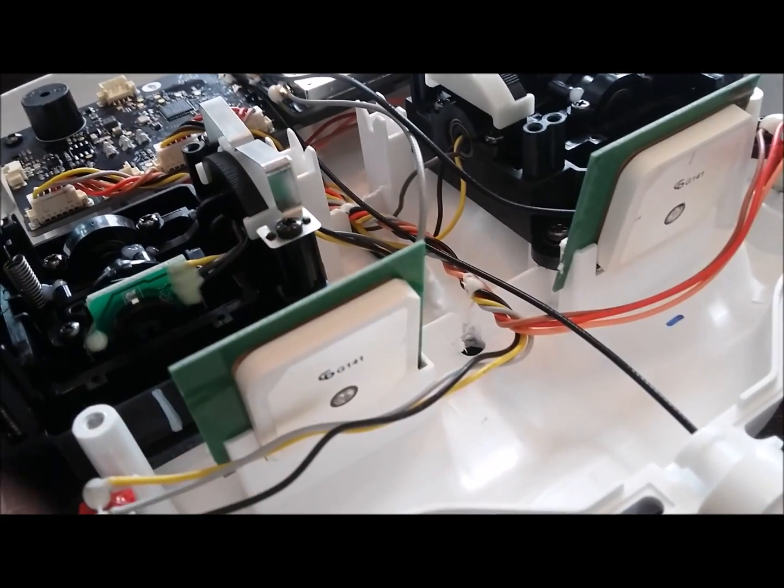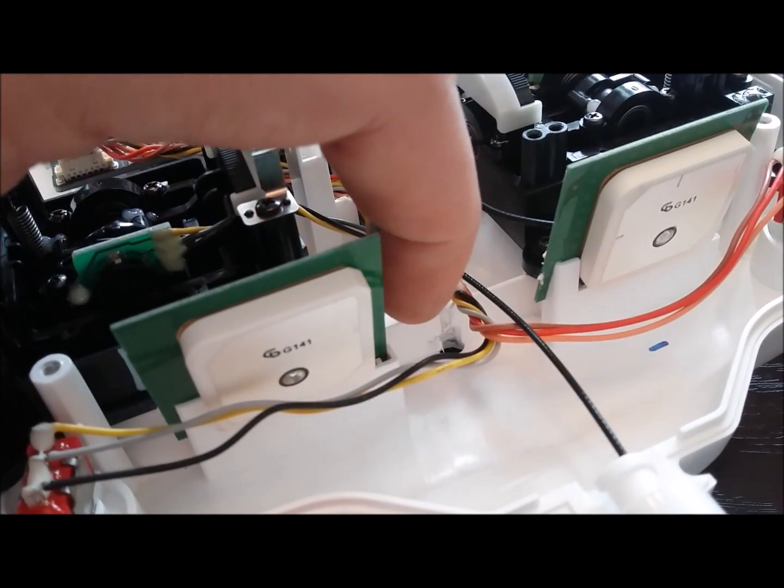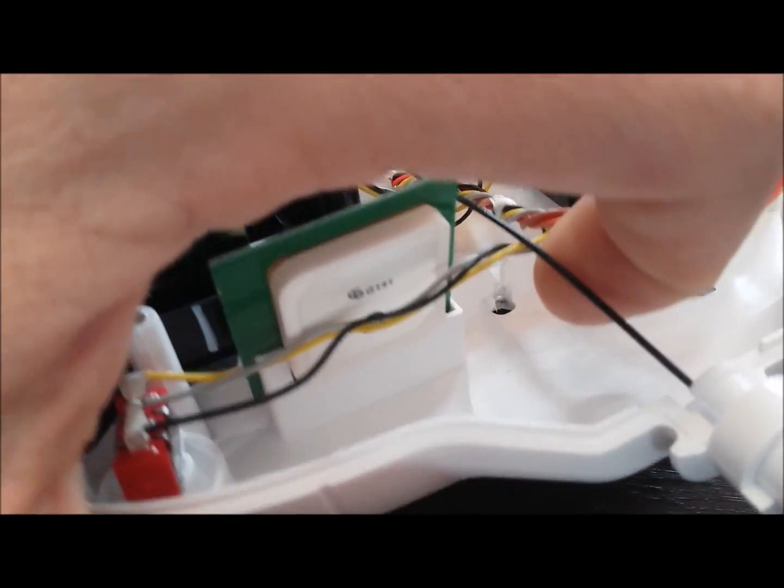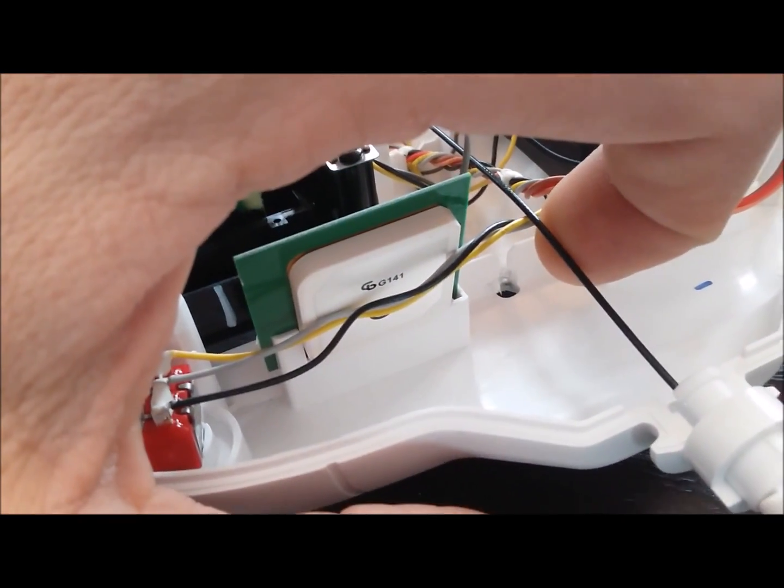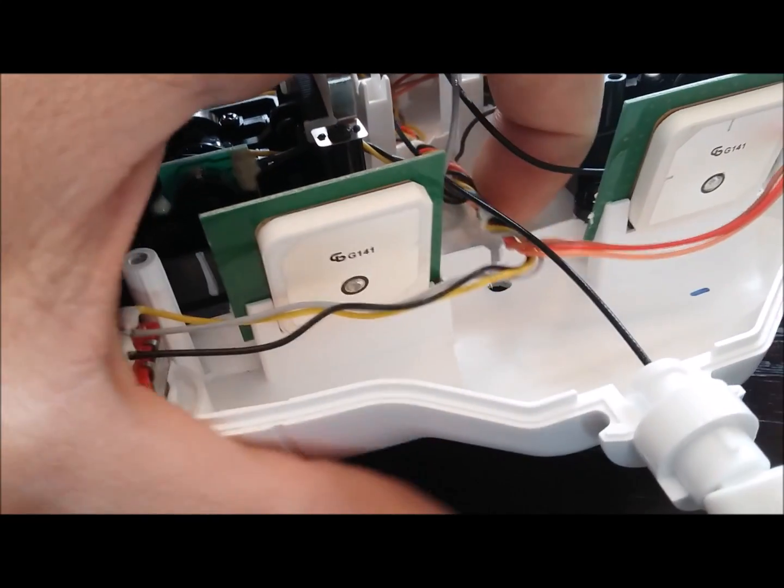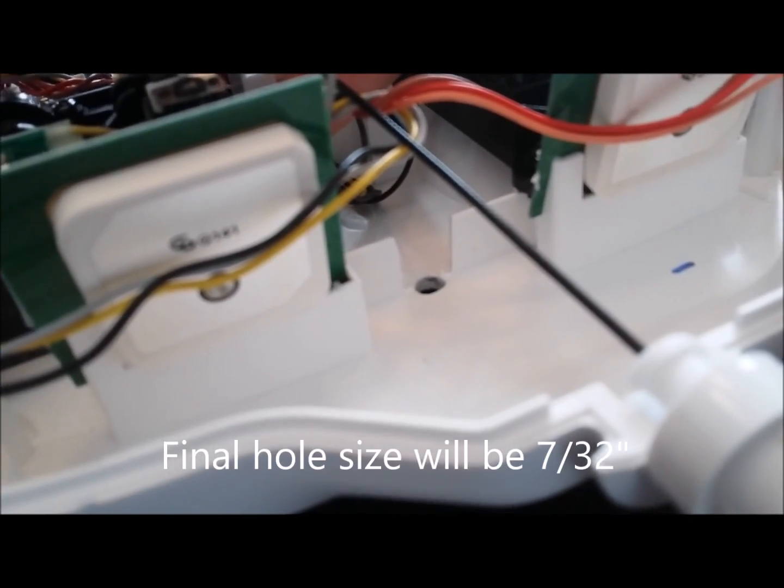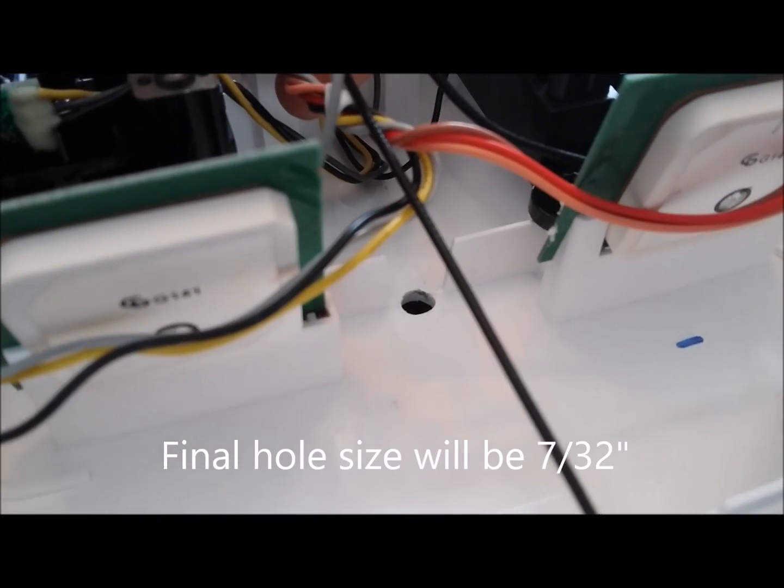So once you get your hole drilled through here you'll notice it drills right into this bit of plastic reinforcement here. I'm going to go ahead with the razor and take away some of the plastic there just to help clean it up. Okay and here you can see with the razor blade how I cleaned up that little bit of reinforcement there and gave it some more room for that piece of metal to come through.